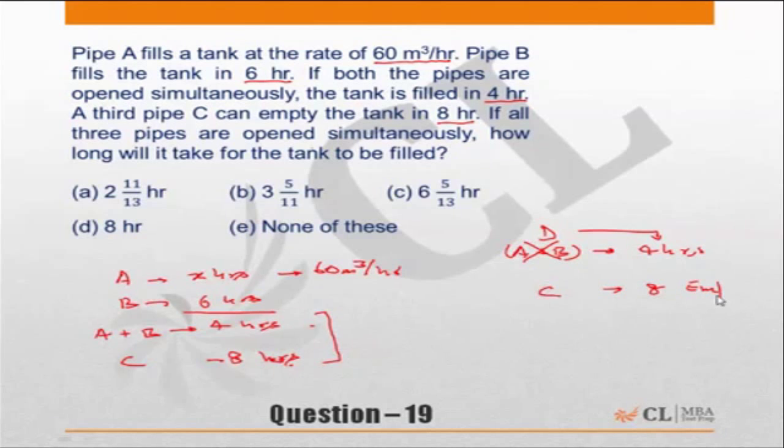If D and C both are open simultaneously, or A, B, and C are open simultaneously, how much time will it take? If you want to use the formula, you can use the formula by saying this will be 4 into 8 upon 8 minus 4, the difference of the two, which is 32 by 4, which is equal to 8 hours.